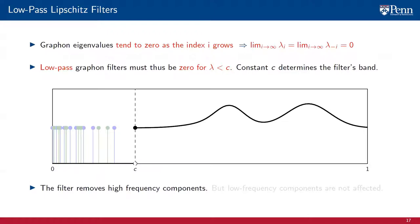This is important because, on one hand, low-frequency components are easier to match with graph eigenvalues. On the other, as 0 is the only point of accumulation for graphon eigenvalues, the number of eigenvalues in the passing band will be finite, allowing us to derive bounds on how close the approximation of a graphon filter by a graph filter will be.